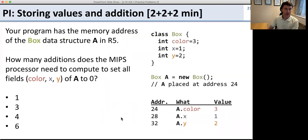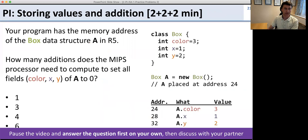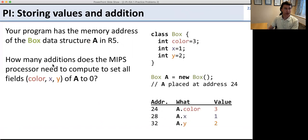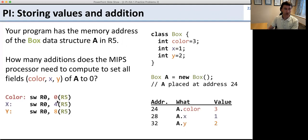Here's another peer instruction question about storing values. We're going to update a box object and set each of its three fields to zero. The question is: how many additions does the MIPS processor need to do that? We need three store words — at offset 0, 4, and 8 from R5 — which require R5 plus 0, R5 plus 4, and R5 plus 8. That's three additions for the address computations.